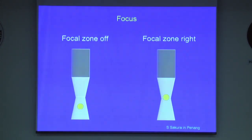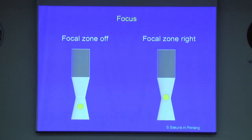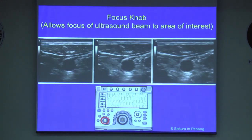Ultrasound beams can be focused, like light focused through a lens on a camera. The focal zone is where the greatest beam strength and intensity occurs and the image resolution is the greatest. So it is very important to adjust the focus at the level of the target, because that is where the needle tip is approaching.